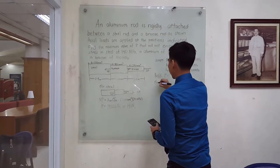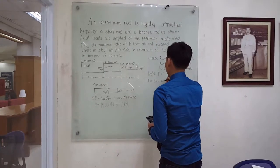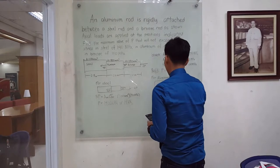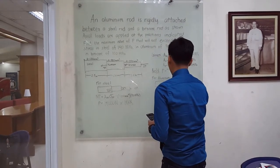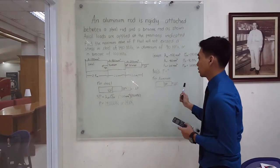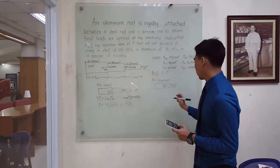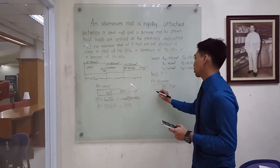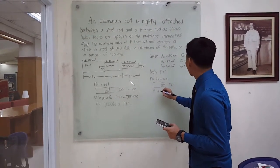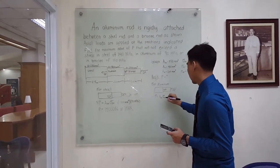For aluminum, we will also find the summation of the forces acting in the aluminum. So 2P minus P is equal to P, and this is equal to the area of the aluminum times the stress of the aluminum, which is 400 square millimeters times 90 MPa.